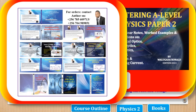For those doing Principal Mathematics, you need 3 books: Math 1, Math 2, and the Topical Question Bank. For those doing Subsidiary Math, it is only one book, Mastering A Level Subsidiary Math Paper 1. For any copy, contact the author on any of these two contacts.